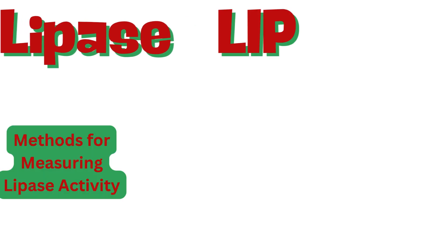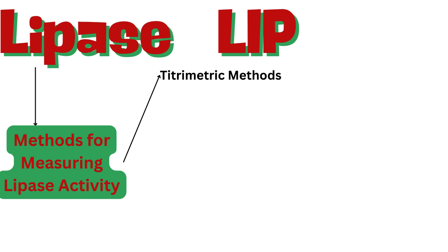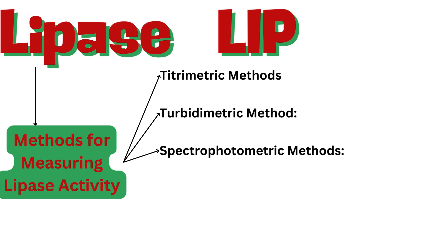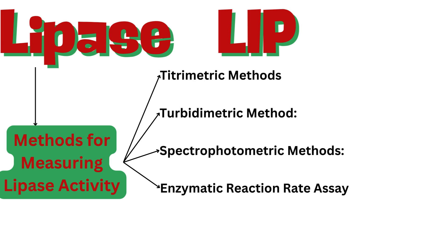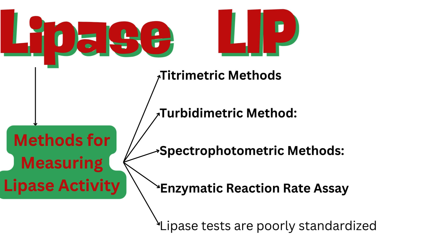There are several methods for measuring lipase activity. Titrimetric methods: lipase hydrolyzes fatty acids from an emulsion of olive oil or oleic acid, and the liberated fatty acids are titrated with dilute alkali. The turbidometric method measures the reduction in turbidity of an oleic acid emulsion. Spectrophotometric methods use various substrates, offering precision, a wide dynamic range, and automation. An enzymatic reaction rate assay uses a synthetic substrate that yields a chromophore upon hydrolysis, offering specificity for pancreatic lipase. Lipase tests are poorly standardized, making misdiagnosis possible when results come from different analytical systems.